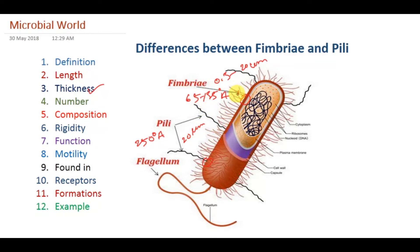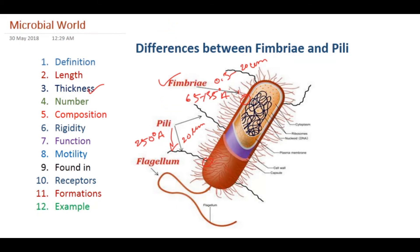Now, what about their composition? Both fimbriae and pili are composed 100% of protein. Fimbriae is composed of fimbrin protein — a fibrous protein — and pili is composed of pilin protein, also a fibrous protein. Both structures are composed of about 160 amino acids, which is the normal value, and can be more but not less than 160 amino acids.